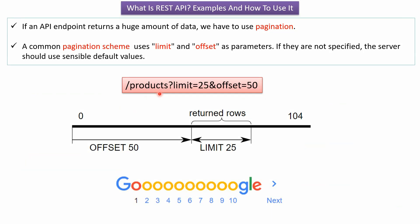If an API endpoint returns a huge amount of data, then we have to use pagination. A common pagination scheme uses limit and offset as parameters. If limit and offset are not specified, the server should use sensible default values. In this case, limit is 25 and offset is 50, meaning it will return 25 rows starting from offset position 50.